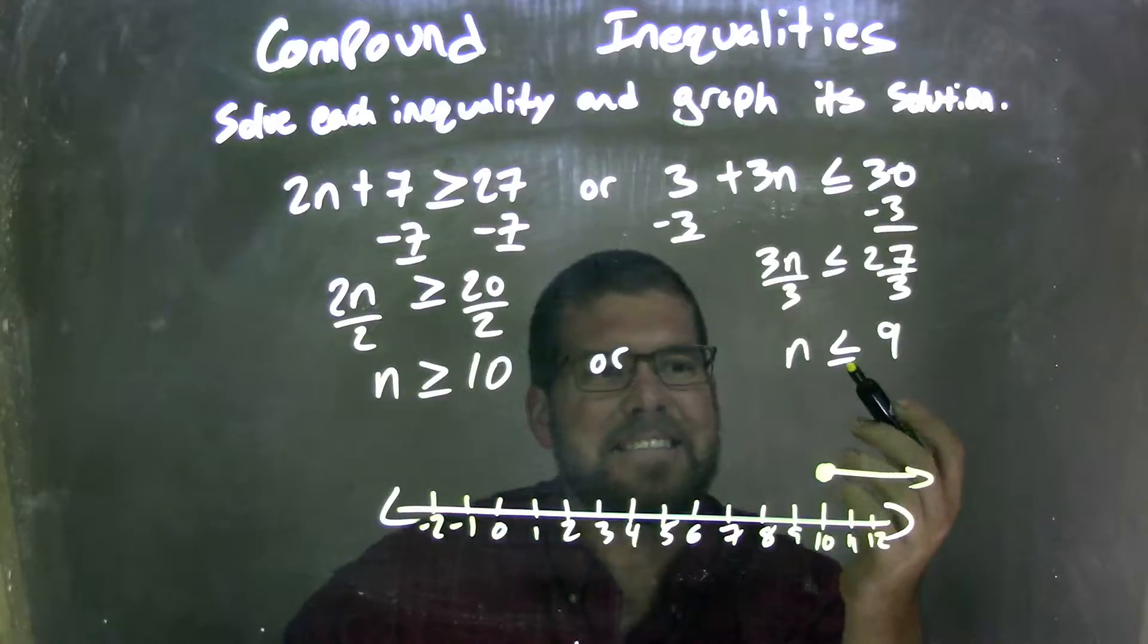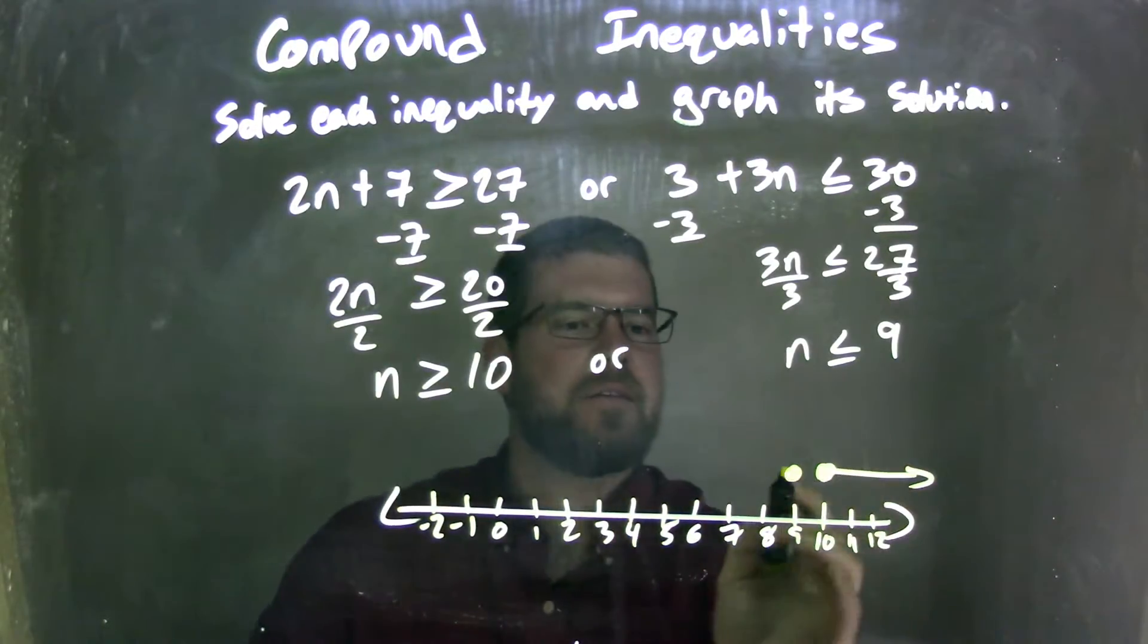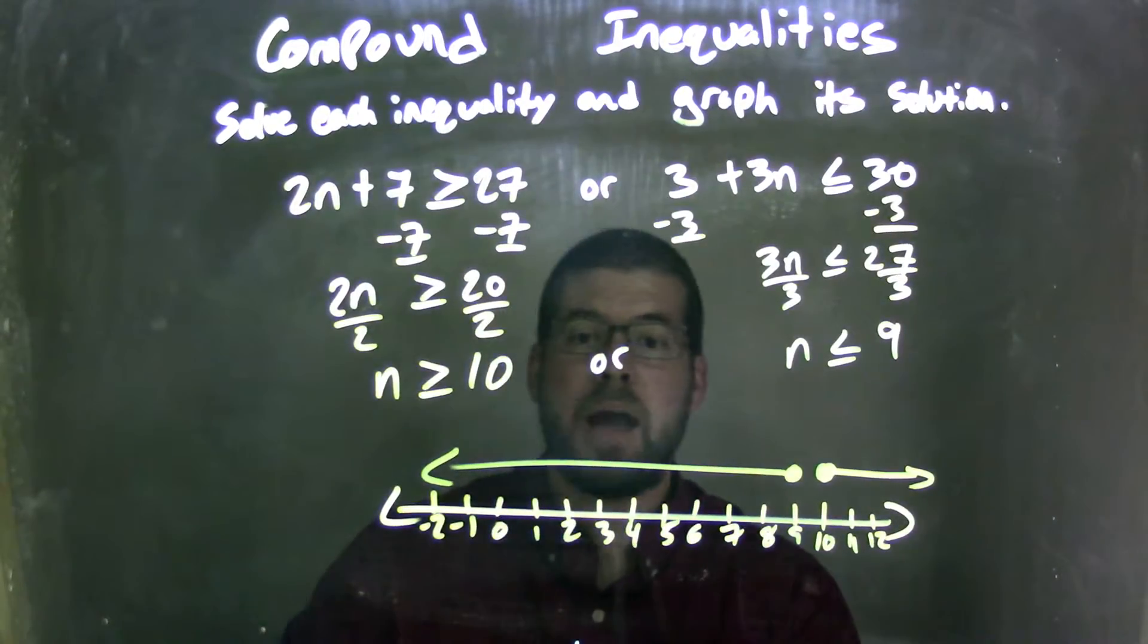Next one. n is less than or equal to 9. Well, it can equal 9, so I'll put a closed circle right there at 9. And if it's less than, I'll put my arrow to the left.